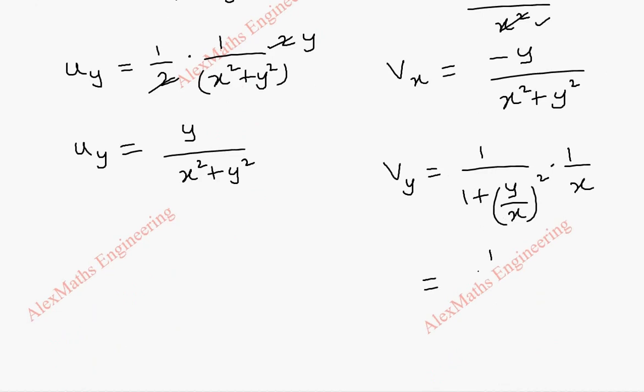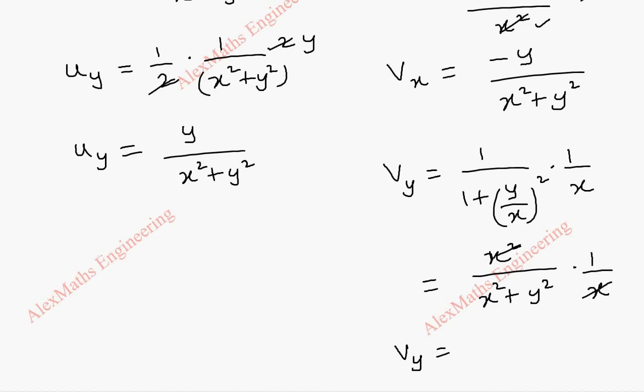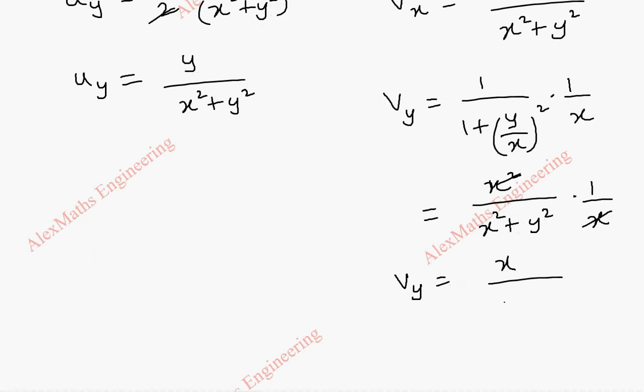Again, we take LCM, 1 by x square plus y square. Y x square will come. That can be taken to the numerator into 1 by x. We can cancel this. So, v_y becomes x by x square plus y square.